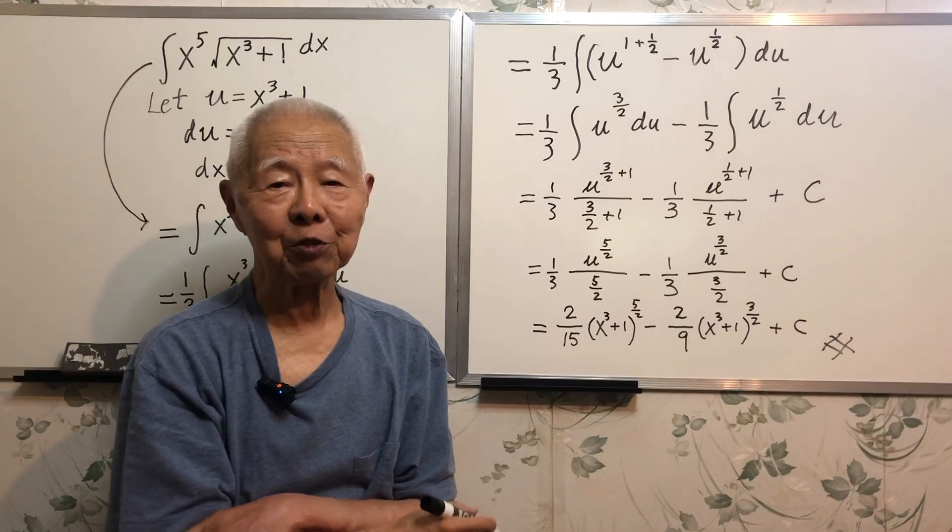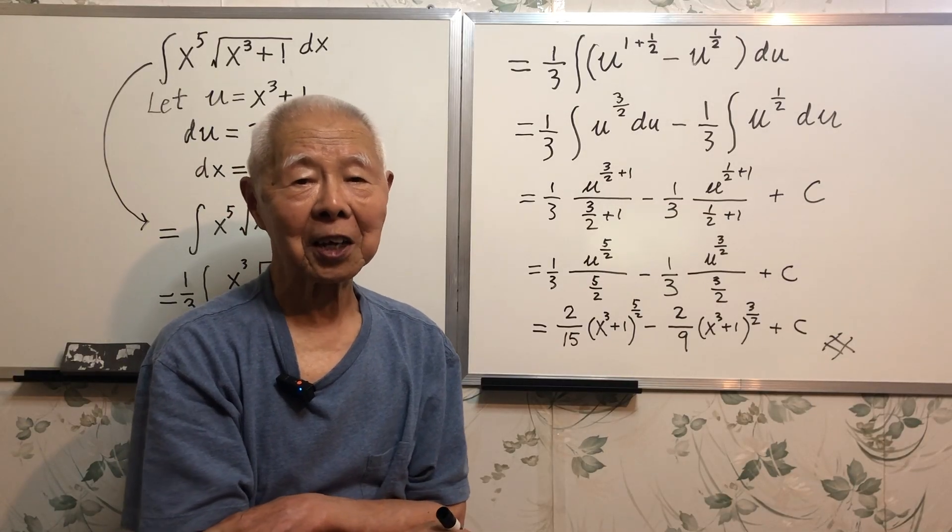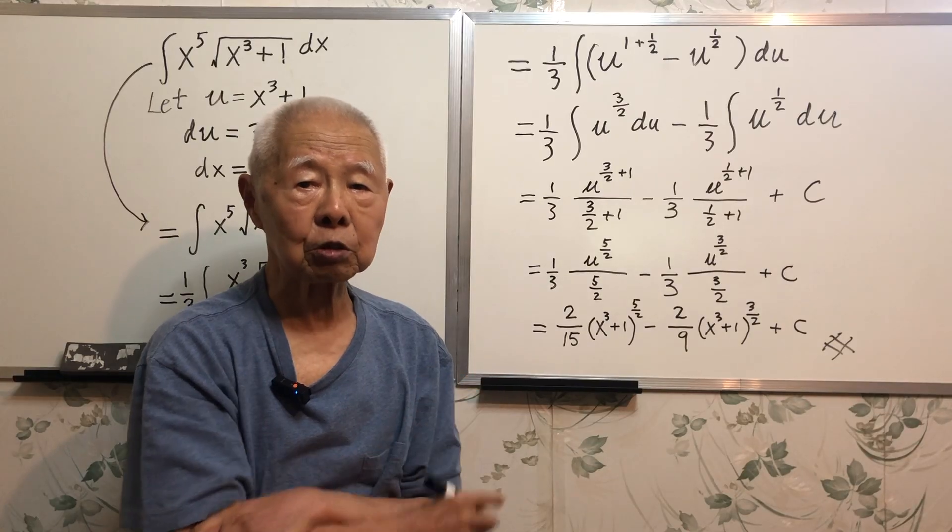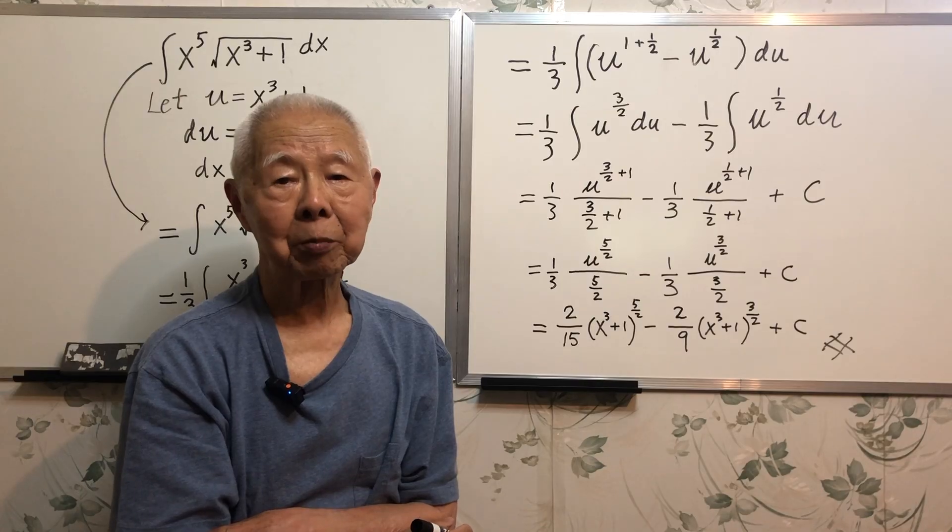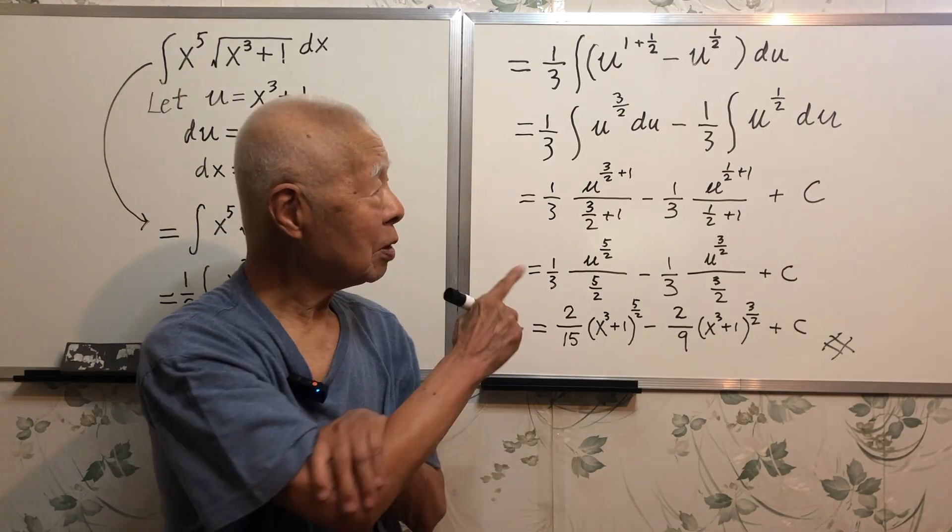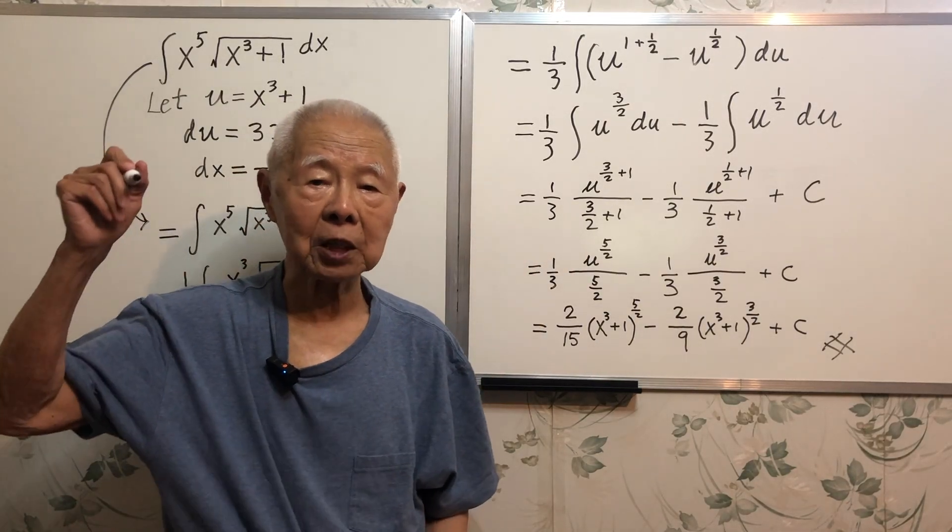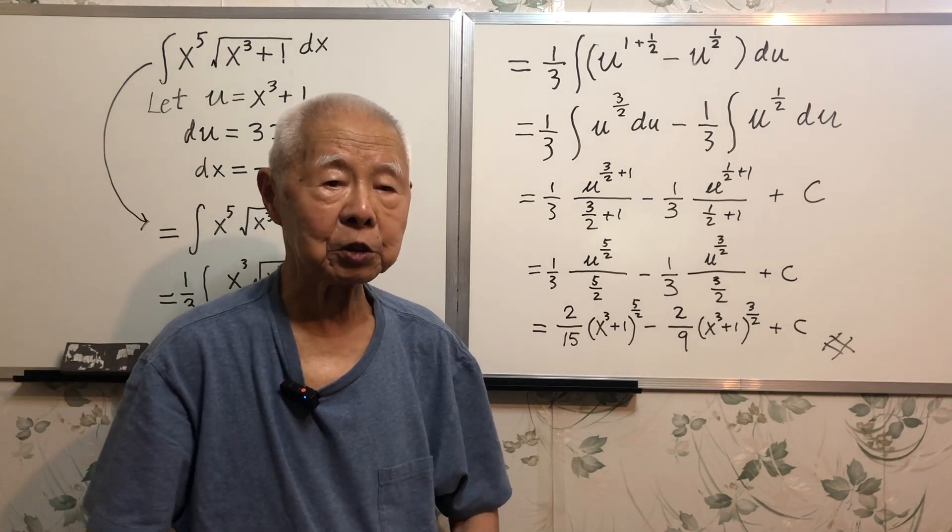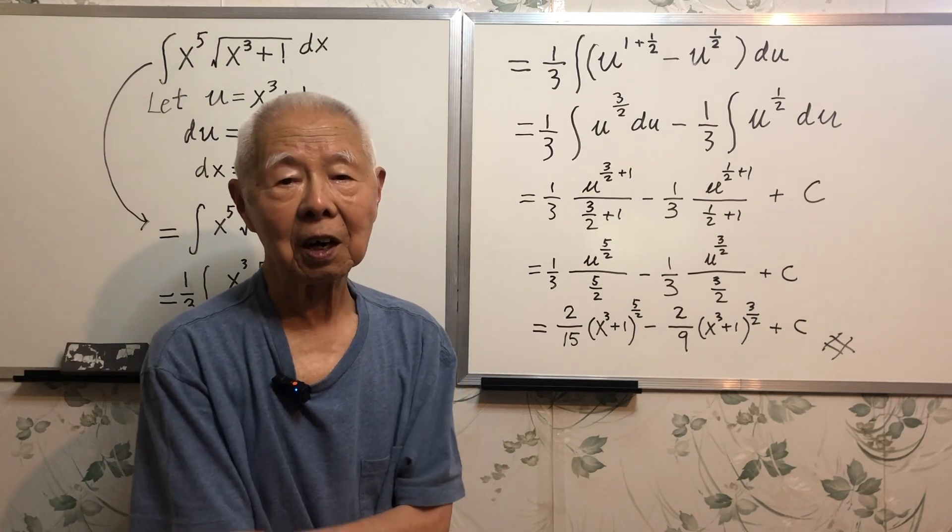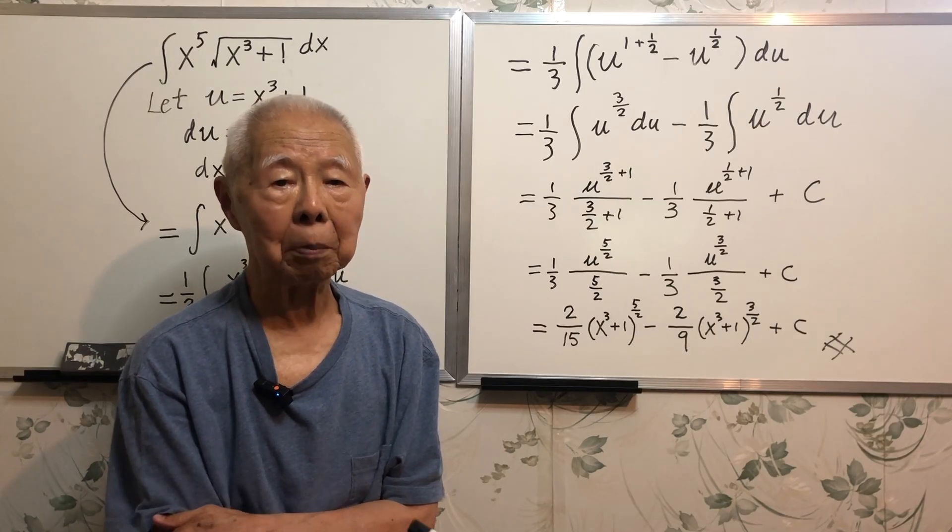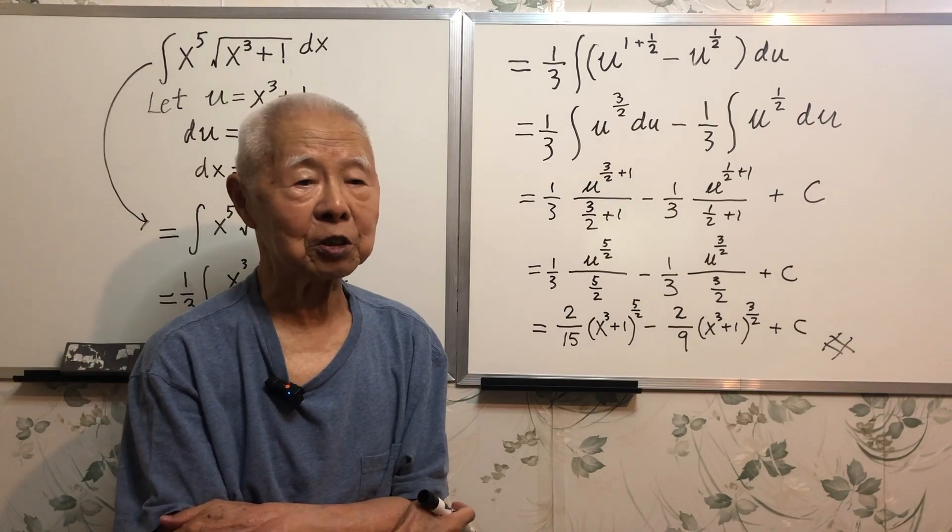Frankly speaking, if we change it to six, I cannot do, I mean the substitution method doesn't work. So, this is the work if the exponent is only five. If you change the exponent, the method of substitution may not work. That's the understanding.